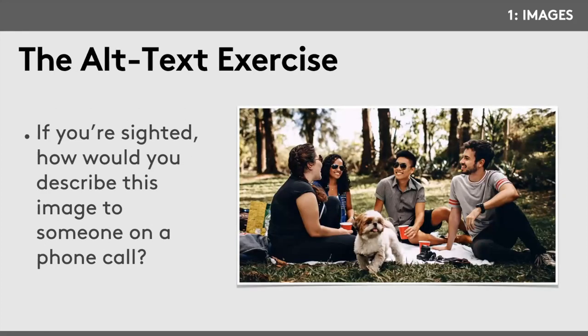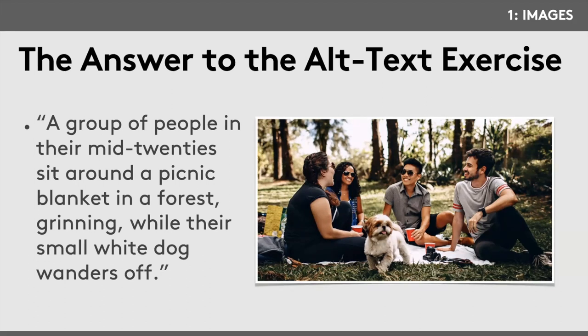Here's an alt text exercise. How would you describe an image to someone on a phone call? One example: 'A group of people in their mid-twenties sit around a picnic blanket in a forest, grinning, while their small white dog wanders off.' That captures the main concept. Some people might also mention red plastic cups, sunglasses, or short sleeves suggesting nice weather — that all works. There's no one who'll tell you your alt text is wrong unless it's a user trying to get information from your website.